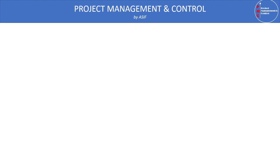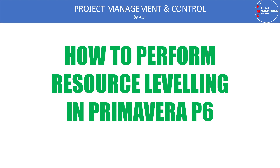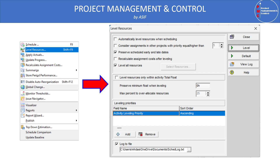You can access the resource leveling dialog box in three ways in Primavera P6. First, press Shift+F9. Normally F9 is common for schedulers to schedule the project, but Shift+F9 brings up the level resources dialog box. You can also click the icon on the main toolbar, or go to the Tools menu where you will find the Resource Leveling option.